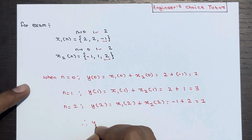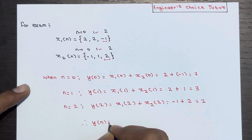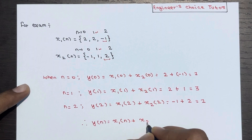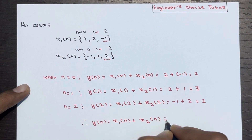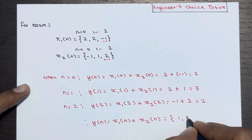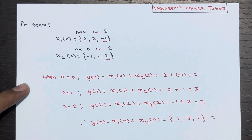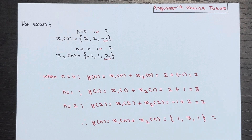The final result: y(n) which equals x1(n) plus x2(n) is {1, 3, 1}. Hope this explanation is clear. That's all about this lecture. If you have any questions, feel free to ask in the comment section, and don't forget to subscribe to our YouTube channel. Thank you for tuning in.